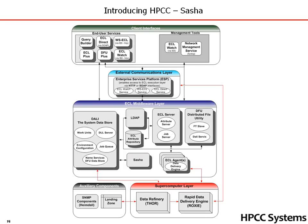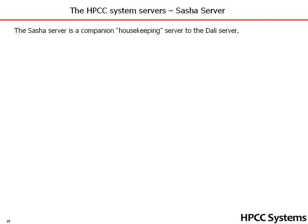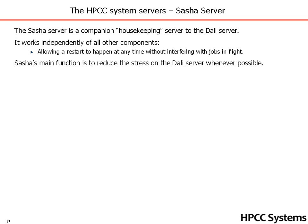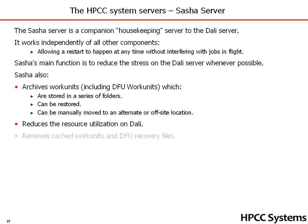The next thing we want to look at is SASHA. SASHA and DALI work together — SASHA is the archiving server that supports DALI. It is a companion housekeeping server that works independently of all other components, allowing a restart to happen at any time without interfering with jobs in flight. SASHA's main function is to reduce the stress on the DALI server. It also archives work units, including DFU work units stored in a series of folders, which can be restored and manually moved to an alternate or even an off-site location. SASHA also reduces resource utilization on DALI and removes cached work units and DFU recovery files.